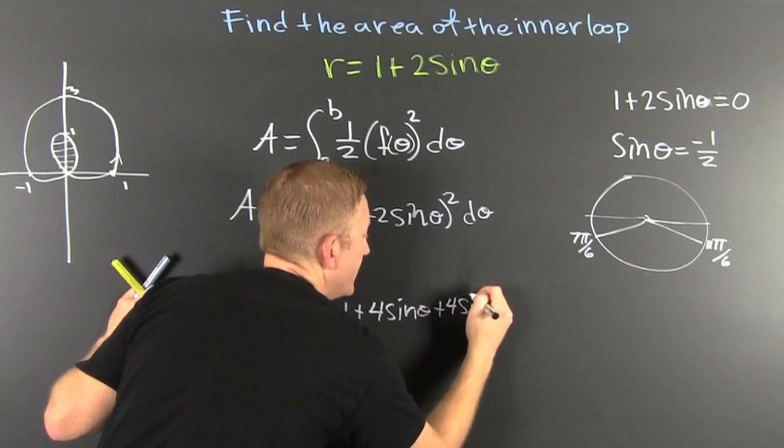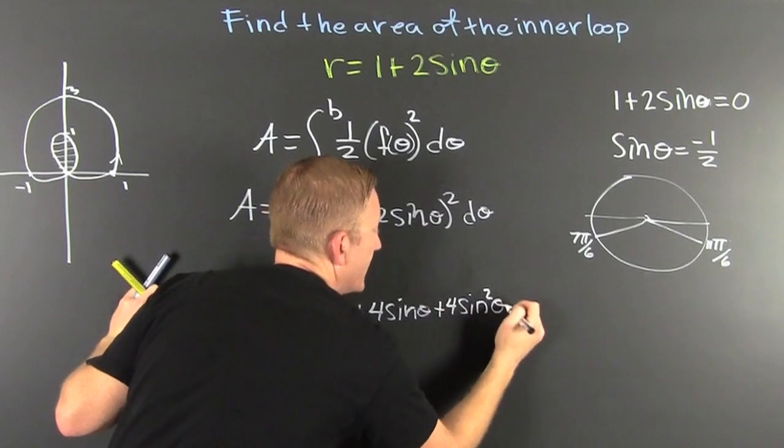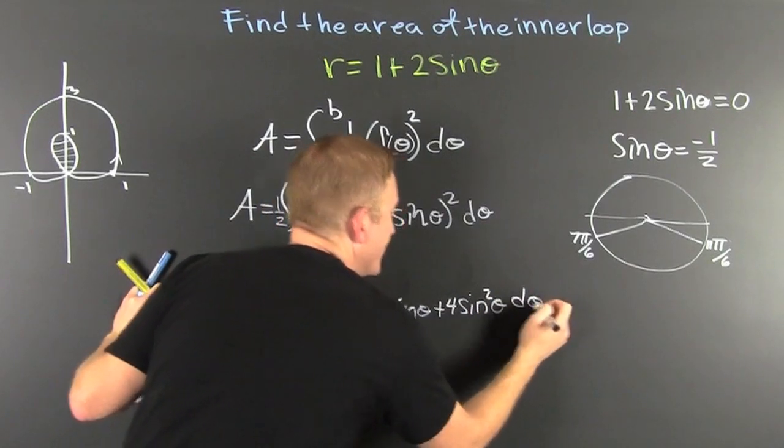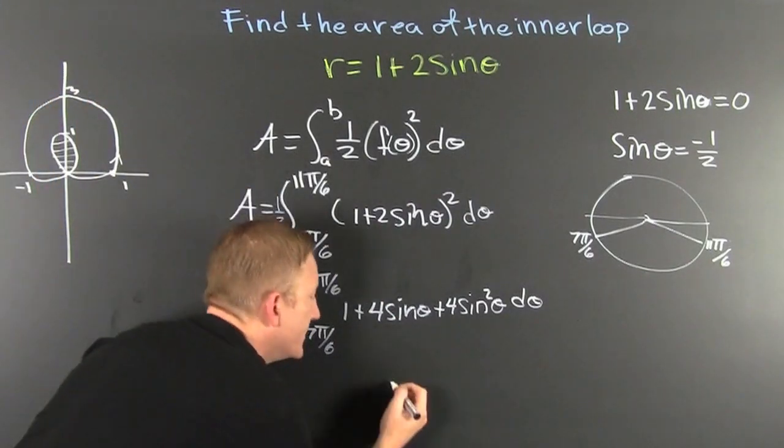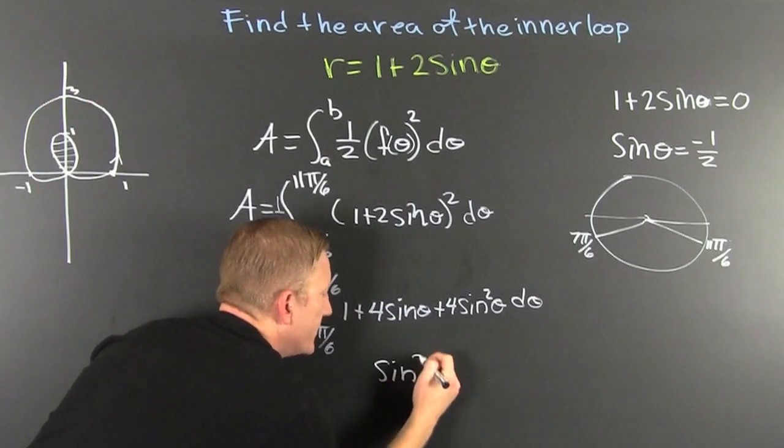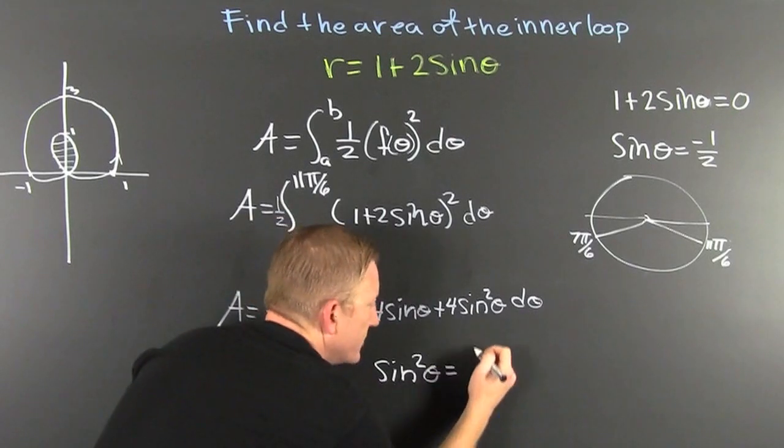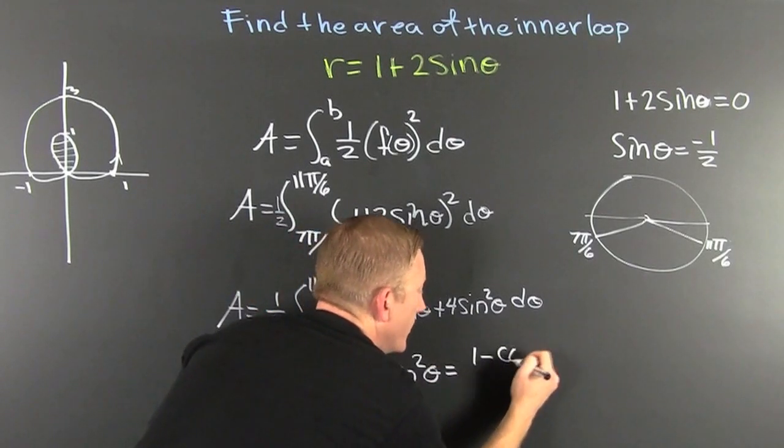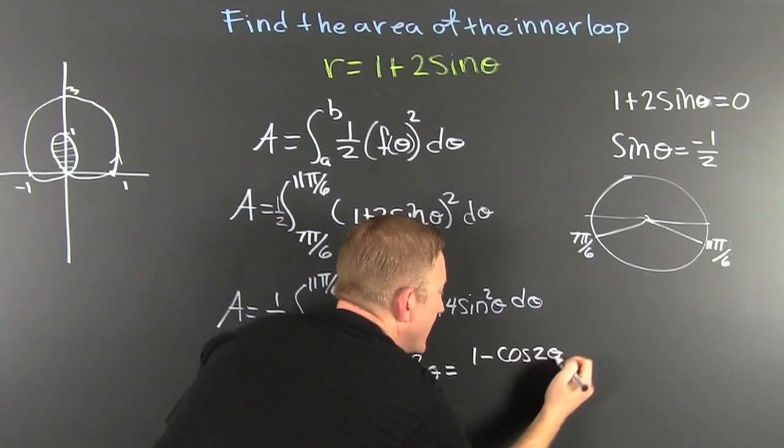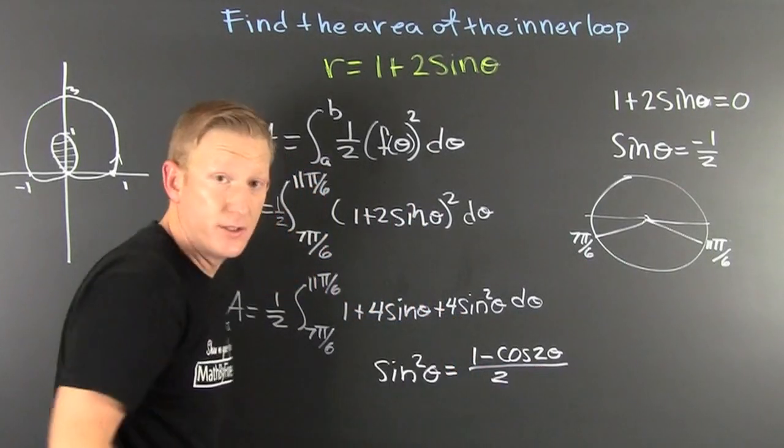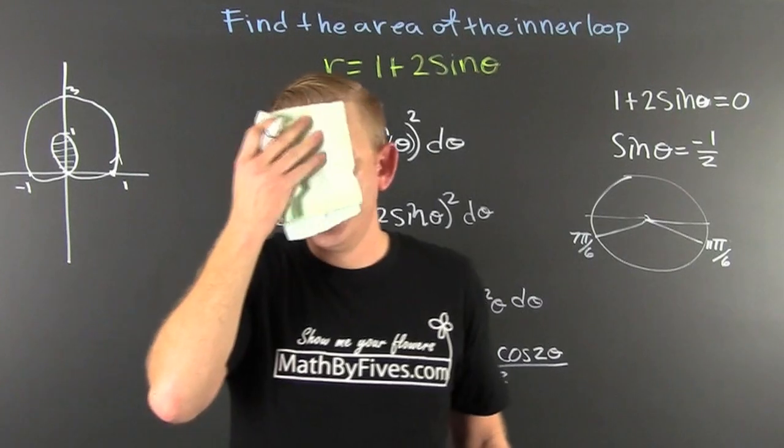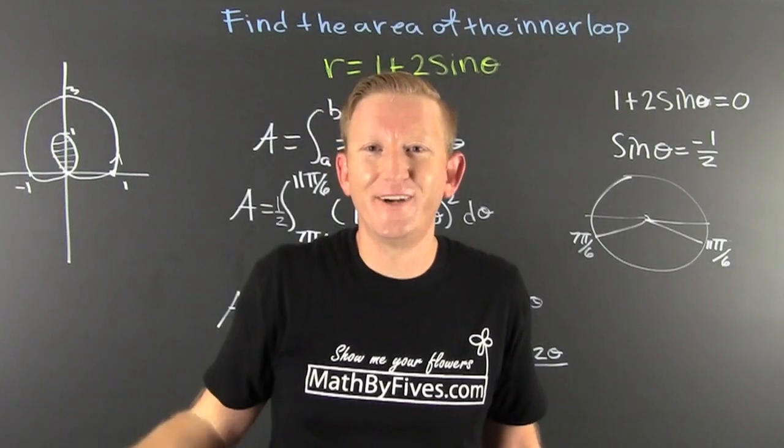Now, from here, you take it. But remember that the sine squared theta has a reduction formula: 1 minus the cosine of 2 theta all over 2. And you're going to want to plug that in there so that you can integrate that right there. And whew, I'm done right here.